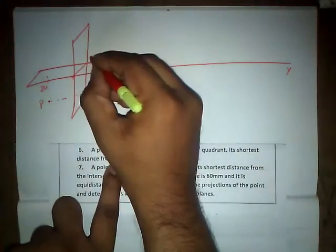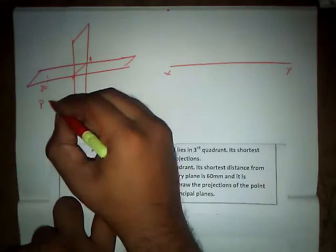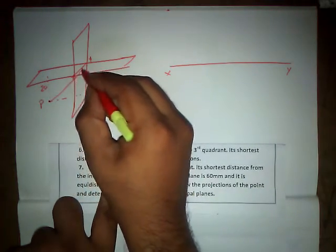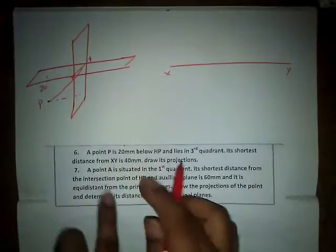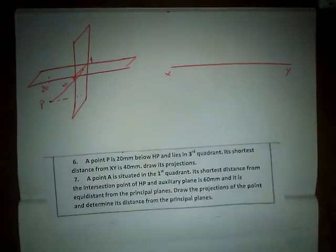So this is our XY reference line. The distance from the point P, shortest distance from XY reference line is going to be, so this is the distance. The distance has been given as 40mm. So this distance is 40mm.